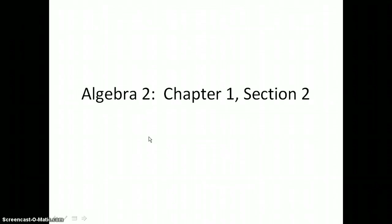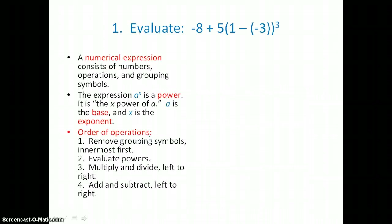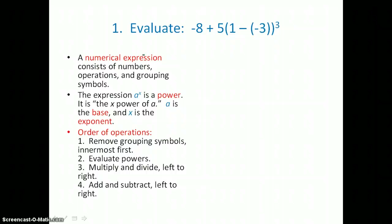Today's lesson is on section 1.2 in your textbook. Our first example is to evaluate negative 8 plus 5 times the quantity 1 minus negative 3, the quantity cubed. To evaluate this numerical expression, we want to use the order of operations. The first step is to remove grouping symbols innermost first.